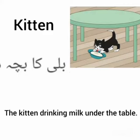First word is 'kitten.' Pahla lafz hai kitten. Kitten ka matlab hotta hai billi ka baccha — kitten means billi ka baccha. Now let's use kitten in a sentence — abh hum kitten ko ek chumni mein istamal karenge.